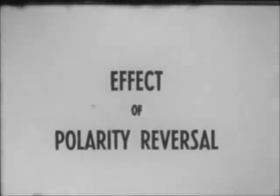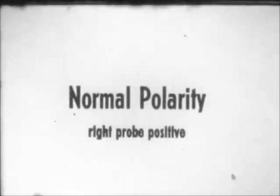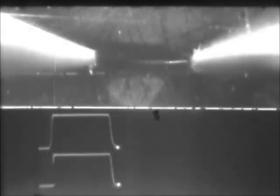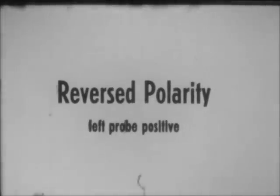We want to show the polarity effect of filament growth. We grow a filament halfway between the probes. Then we apply a positive voltage to the left probe. As you see, the half-grown filament receded and the new filament grows from the left to right.